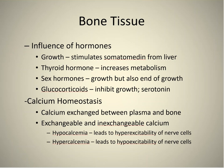Hormones affect bone growth. Growth hormone stimulates somatomedin from the liver, which stimulates bone growth. Thyroid hormone increases metabolism, which increases bone growth. Sex hormones promote growth but also end growth at the end of puberty. Glucocorticoids actually inhibit growth. Calcium homeostasis involves calcium exchange between plasma and bone — exchangeable and non-exchangeable calcium.